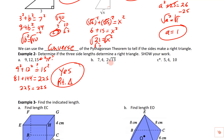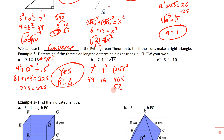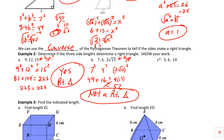For sides 4, 7, and 2 radical 13, it's hard to tell which is biggest, so let's square each: 7 squared is 49, 4 squared is 16, and squaring 2 radical 13 gives 4 times 13 which is 52. So 52 is the largest — the potential hypotenuse. But for the converse, the two legs squared must add up to equal the hypotenuse squared. Since 49 plus 16 equals 65, not 52, this is not a right triangle.